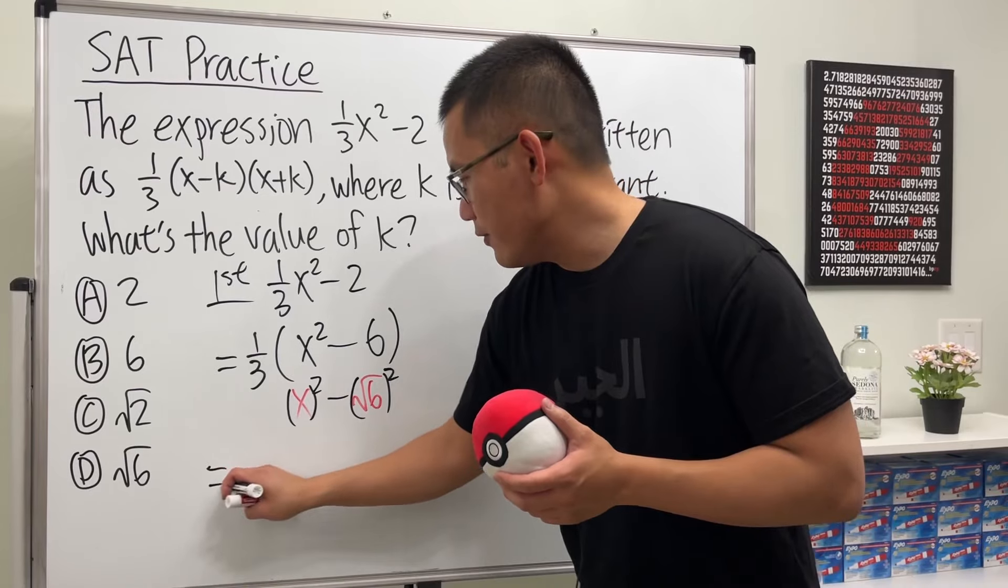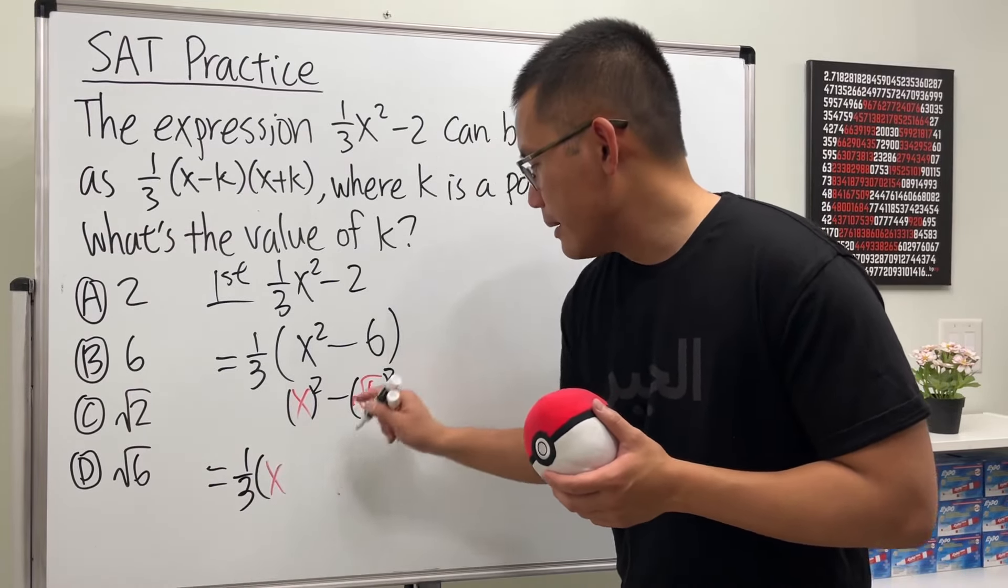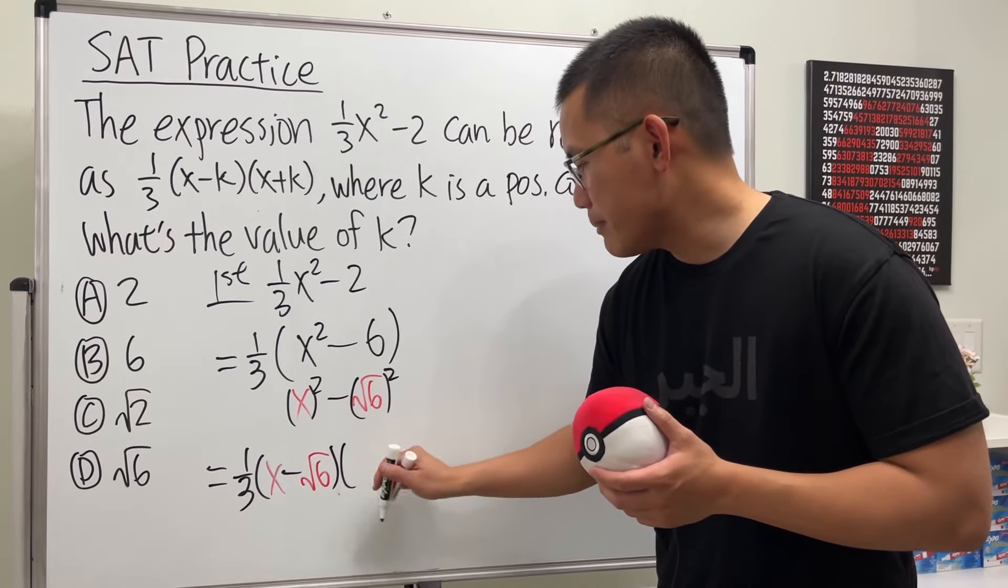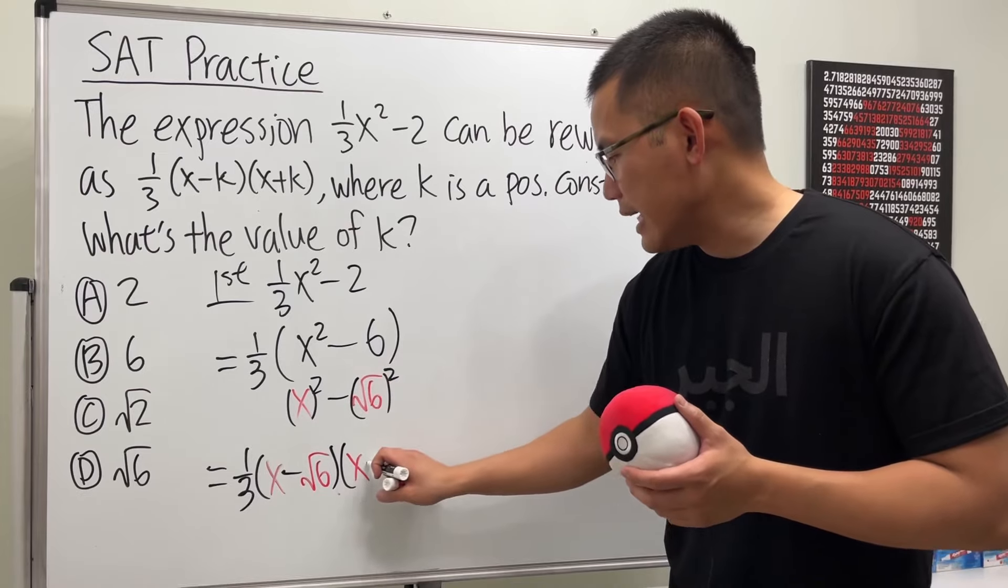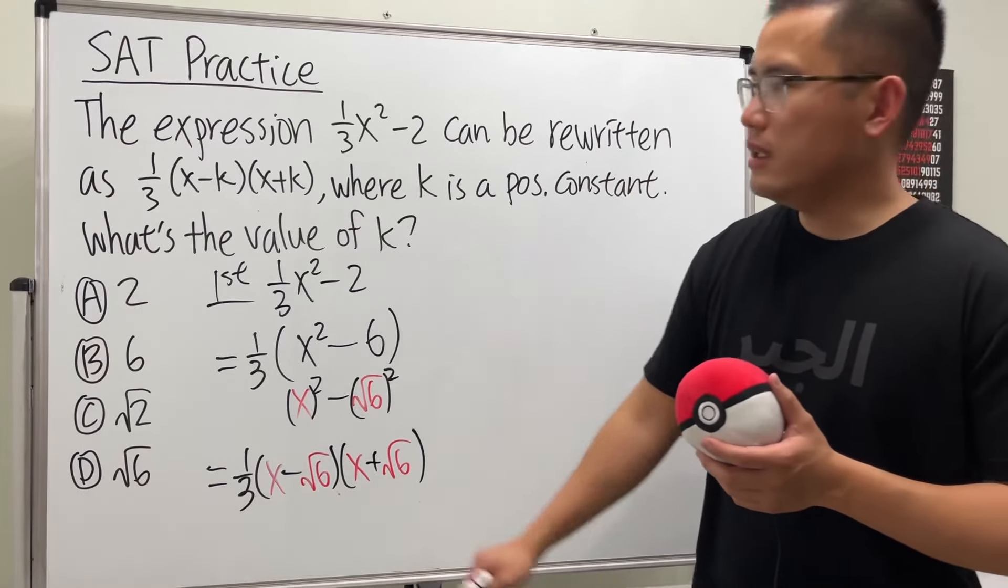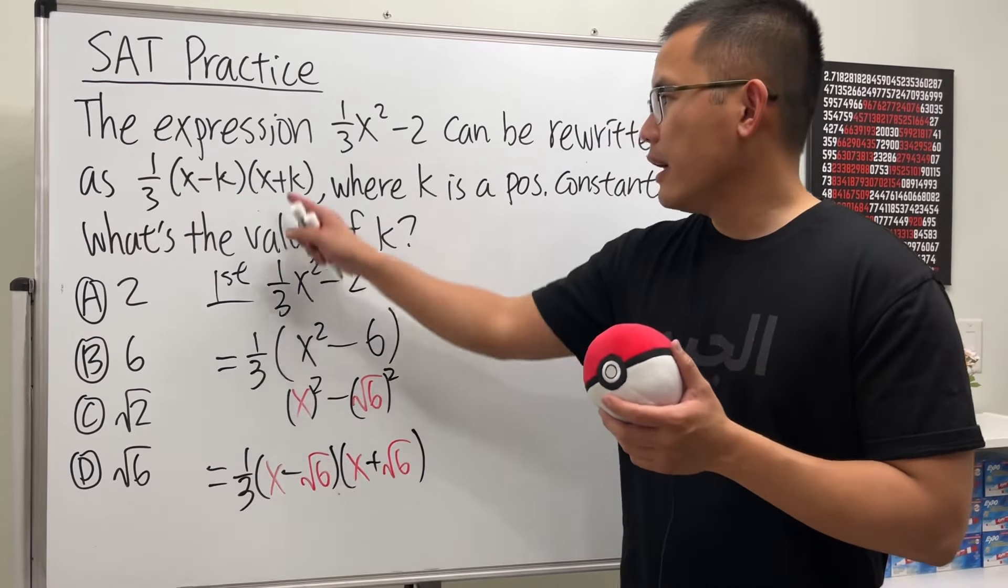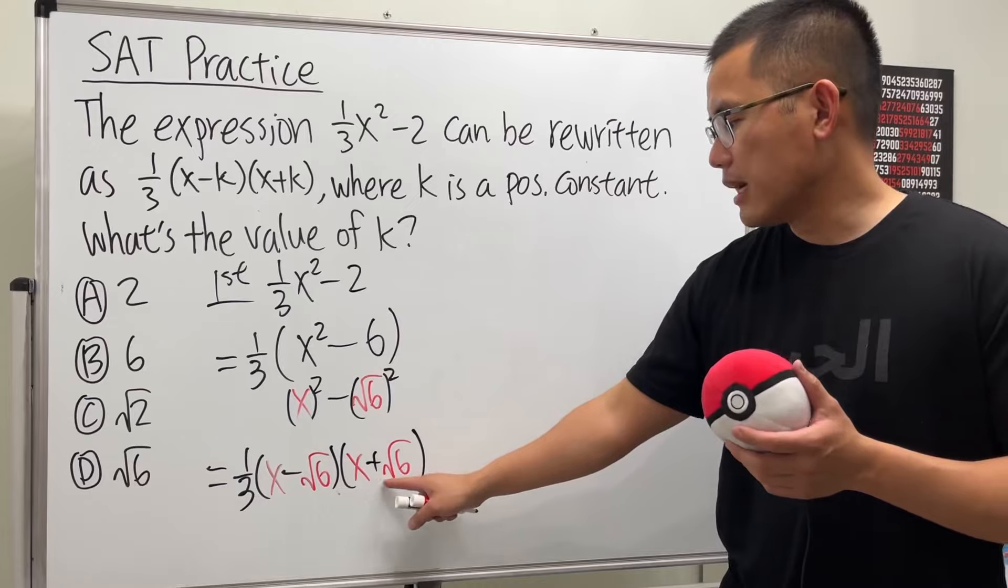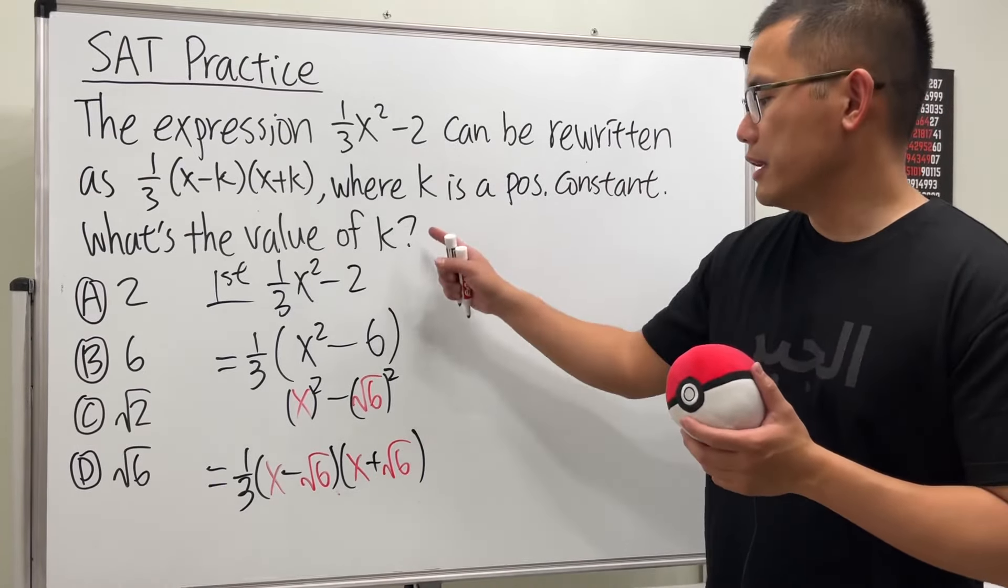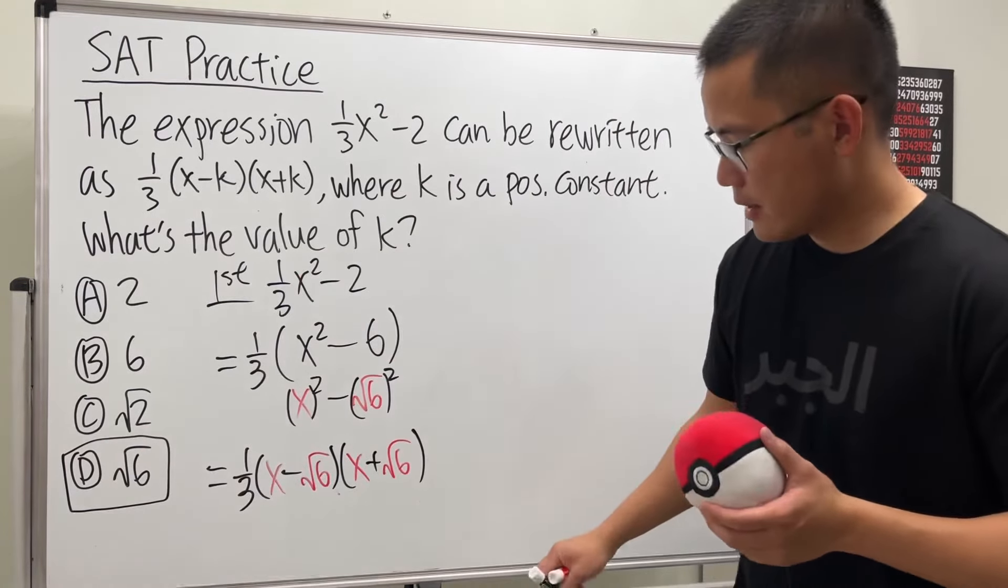So this right here can be factored in. We get 1/3, and then we have x minus square root of 6, and then we multiply that by x, and then we add square root of 6. And as you can see, x minus k is x minus square root of 6, x plus k is x plus square root of 6. The answer is k equals square root of 6. So here we have d.